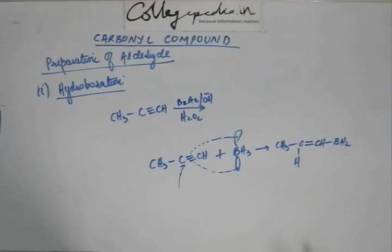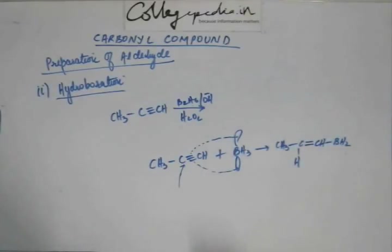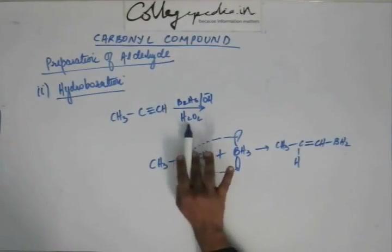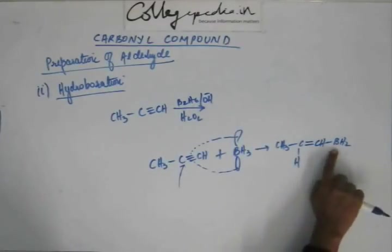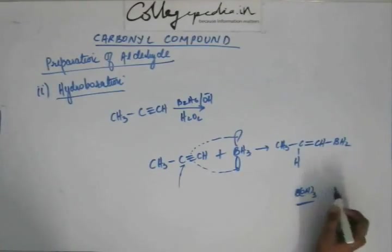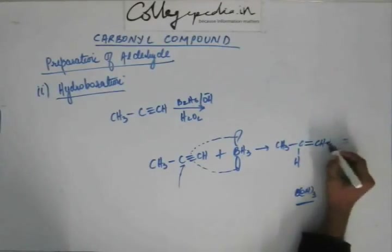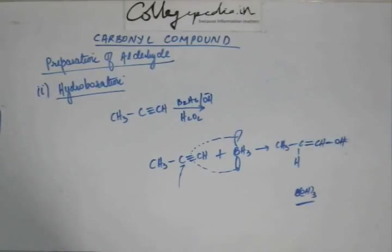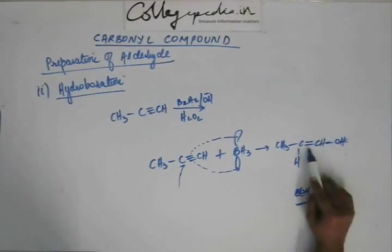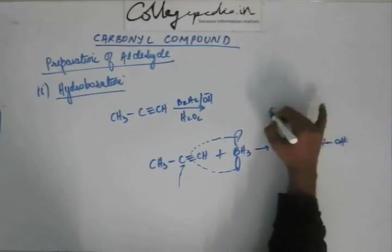This process repeats one more time — the bond breaks again and another hydride comes out. At the end of the reaction, hydrogen peroxide comes in and the boron leaves as B(OH)₂, with an OH group attached to the terminal carbon. Now, if you know tautomerism — which we studied earlier — this product is an enol form, containing both an alkene and an alcohol. This enol tautomerizes very quickly to give us the keto form.